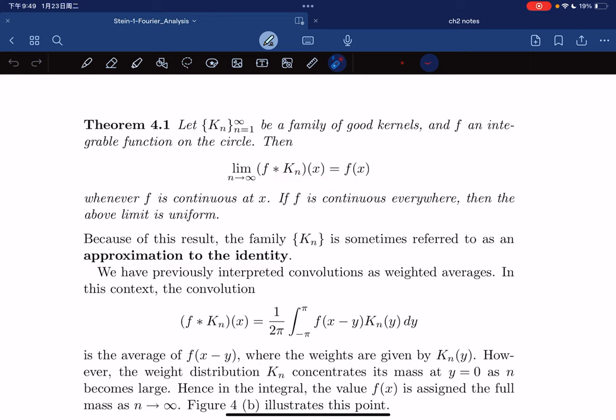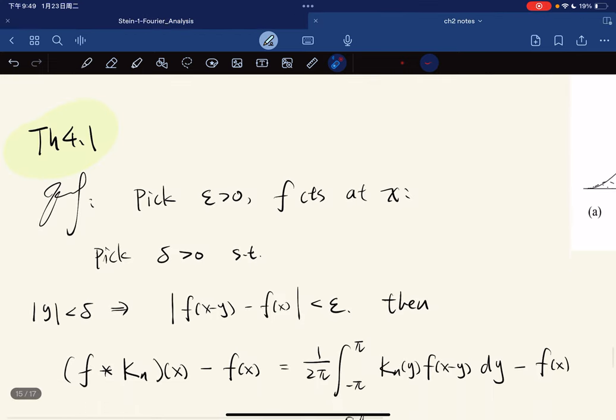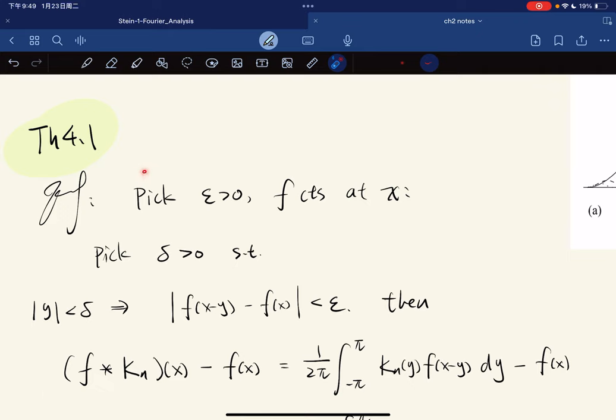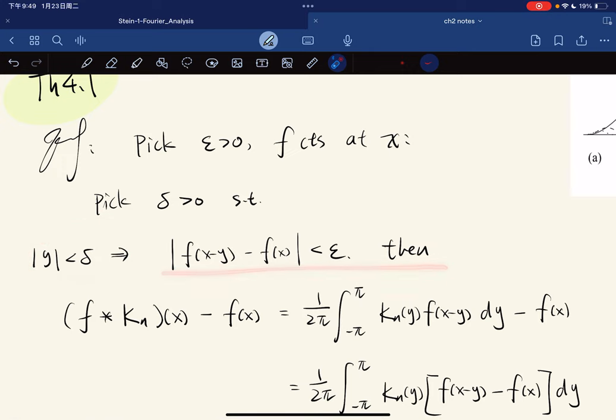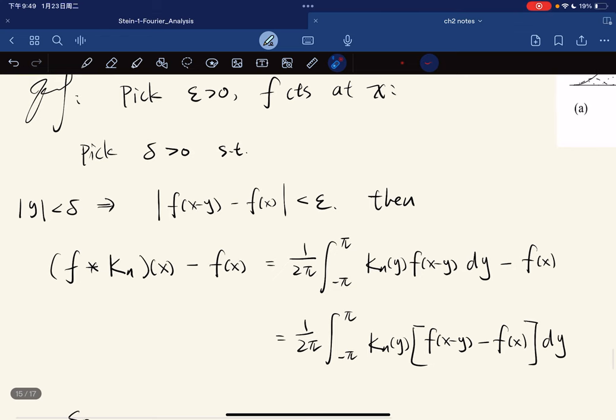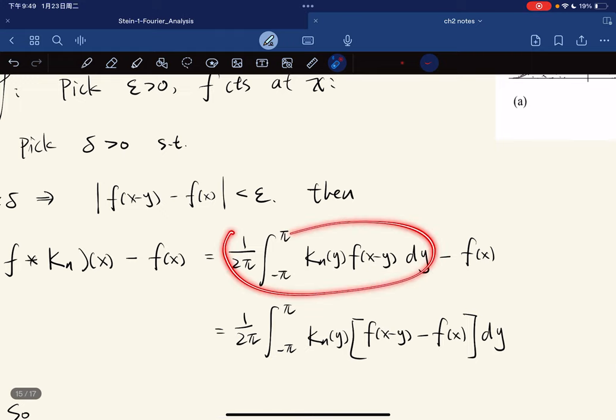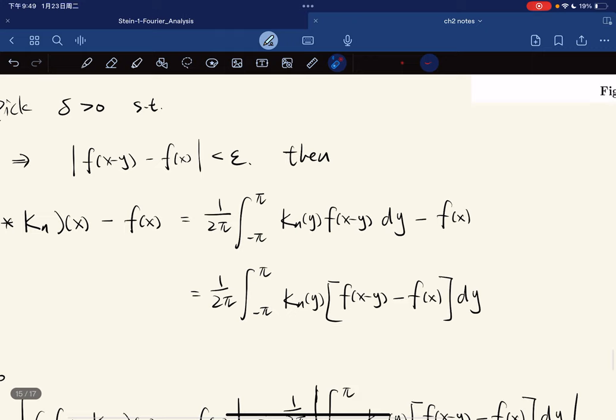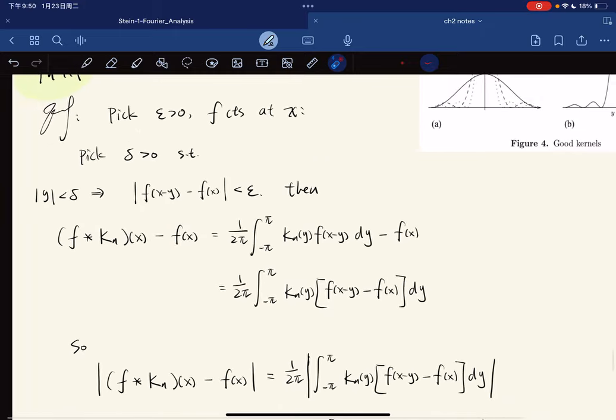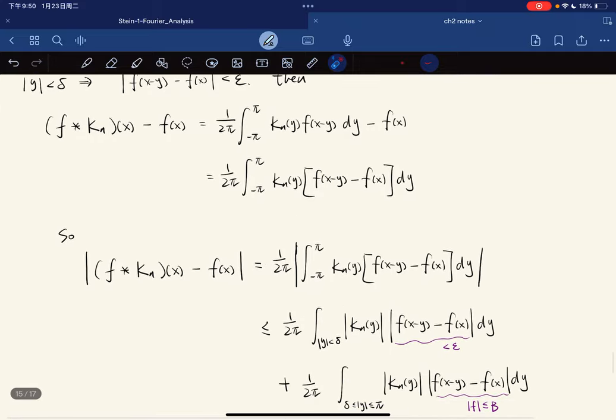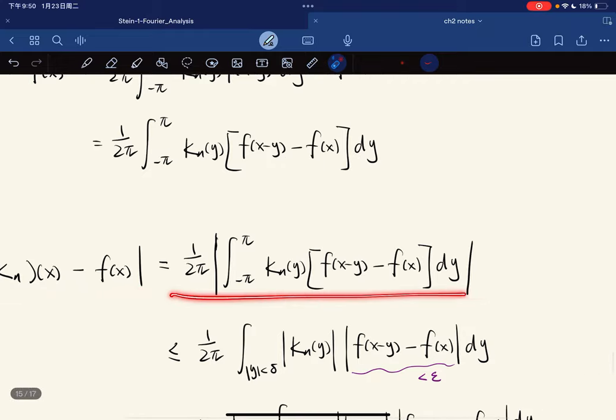To prove this, we first use that f is continuous. Then we can pick a delta such that for any |y| less than delta, we have this less than ε. We write out the convolution difference and bring f(x) in—the length is 2π so we can bring this in because we have 2π above. We put absolute values on both sides.